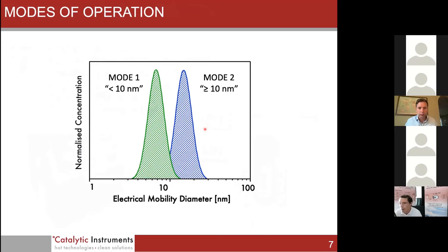There are primarily two modes of operation with the device. Mode one is a smaller less than 10 nanometer GMD aerosol, and mode two is larger than 10 nanometer GMD. If you wanted to measure 10 nanometer aerosol specifically, you might want to use mode two.